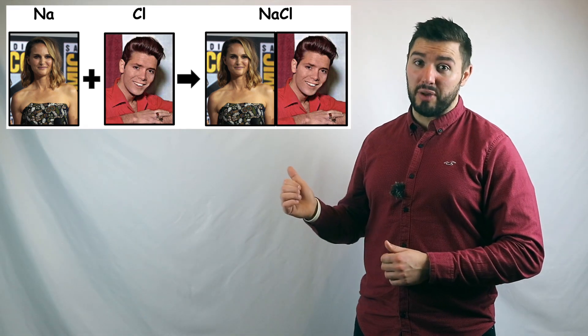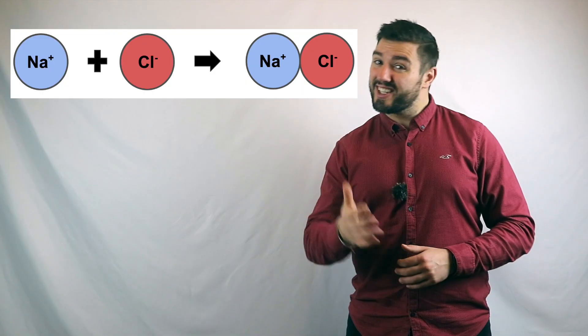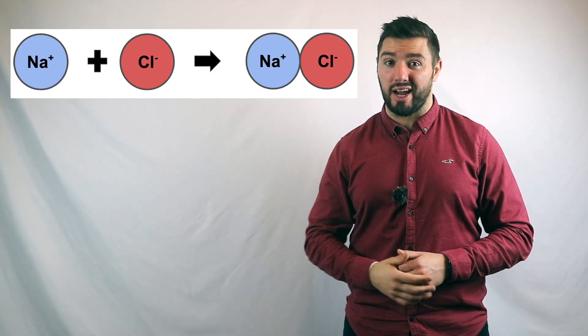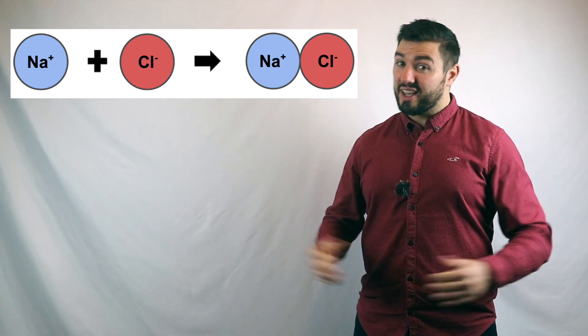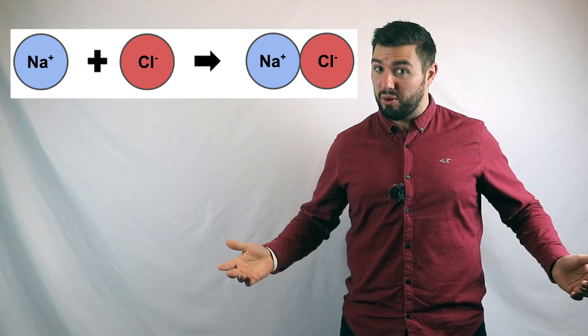You'll notice that we have the same amount of people on both sides of that arrow. It's the same with atoms in a chemical reaction. Whatever you've got on the left, you have to have on the right. You can't have more, you can't have less. That's how it works.